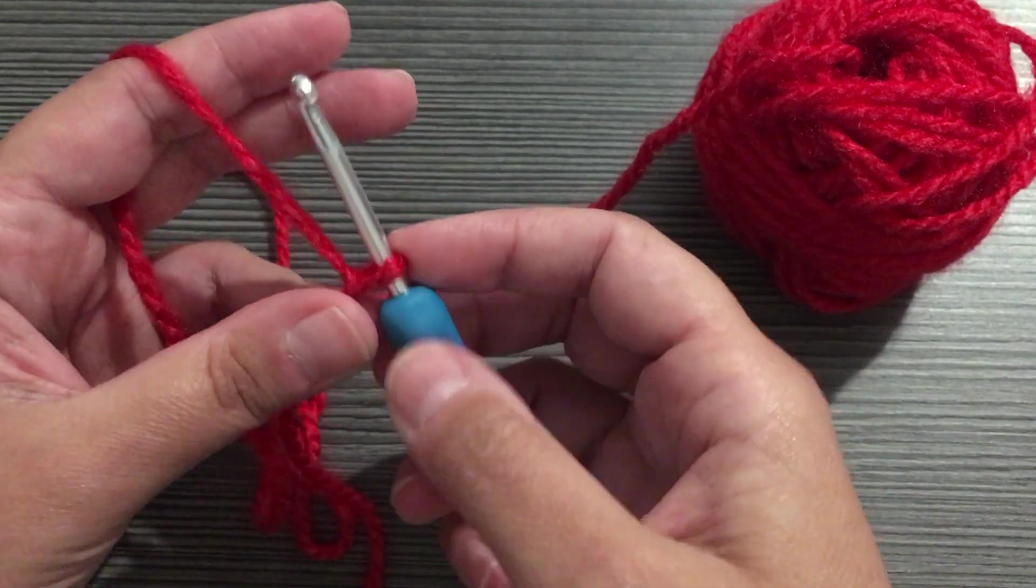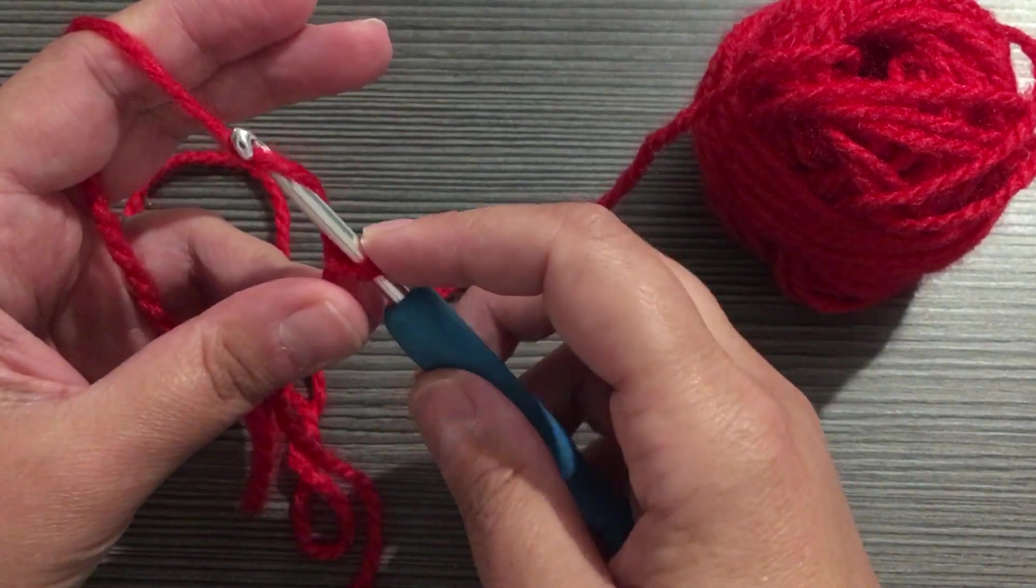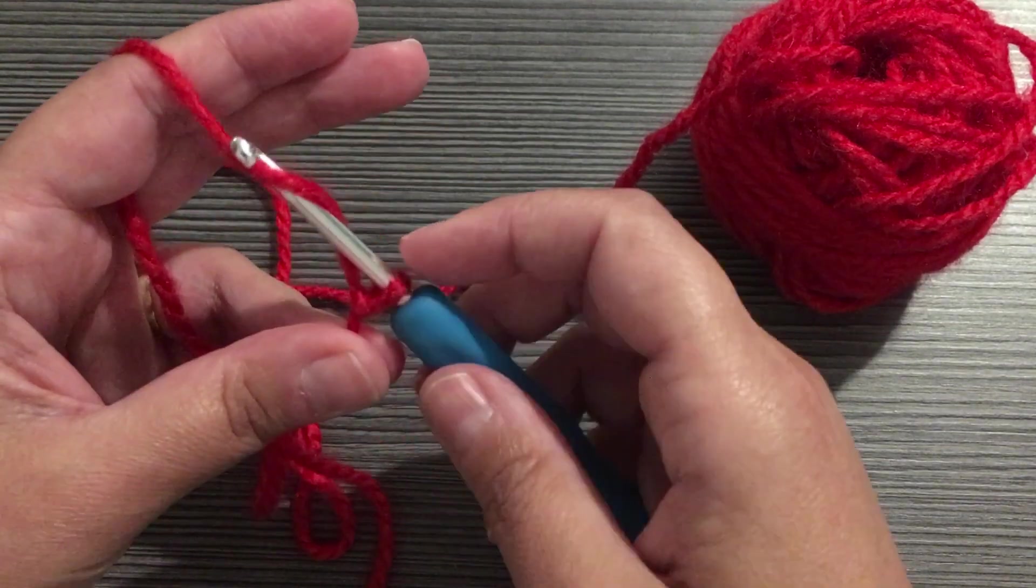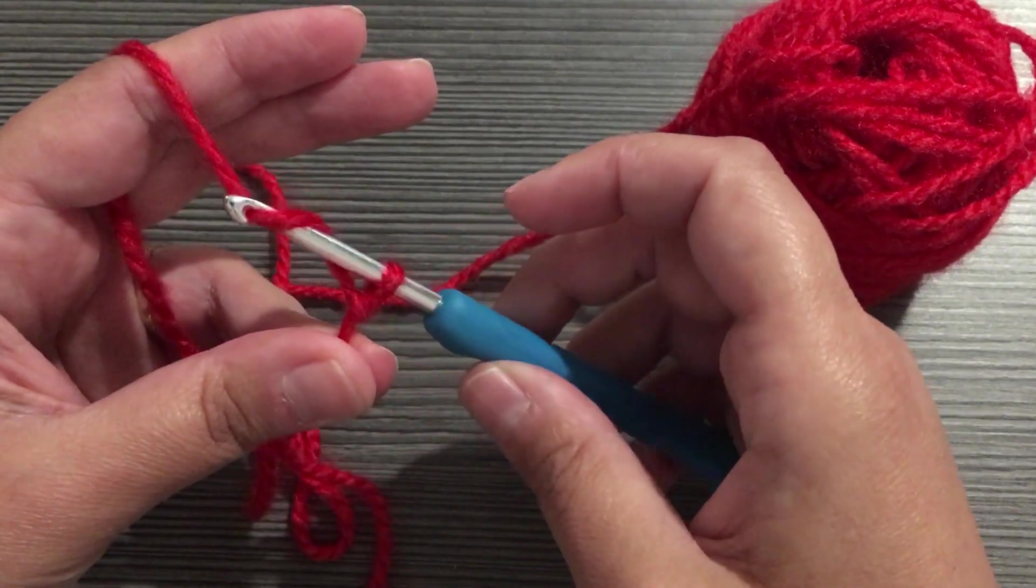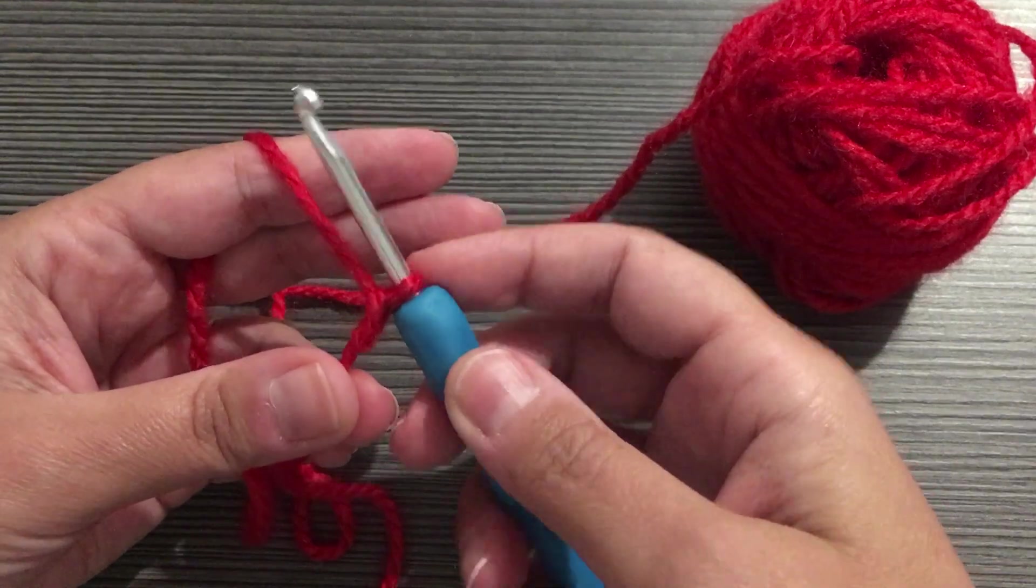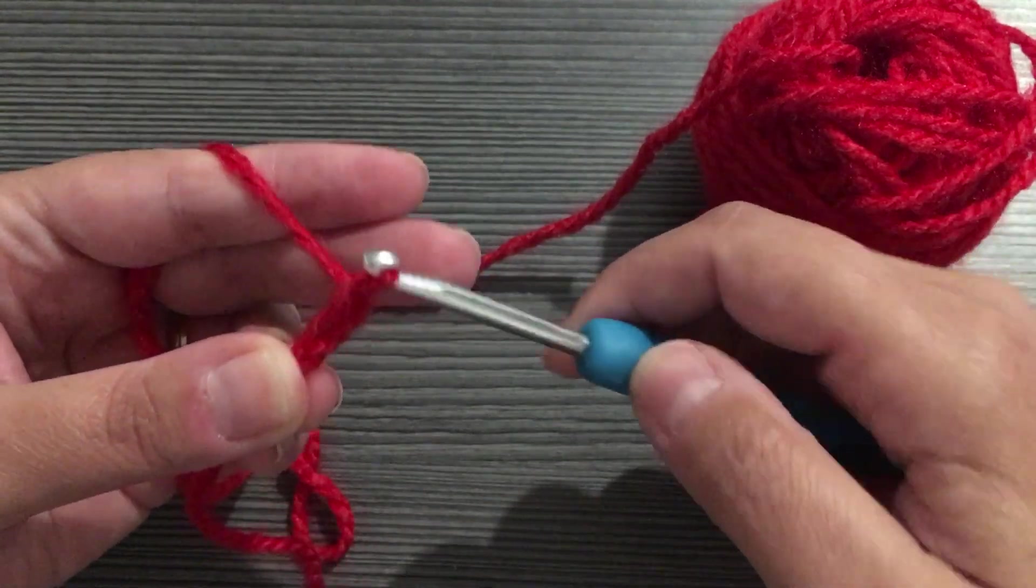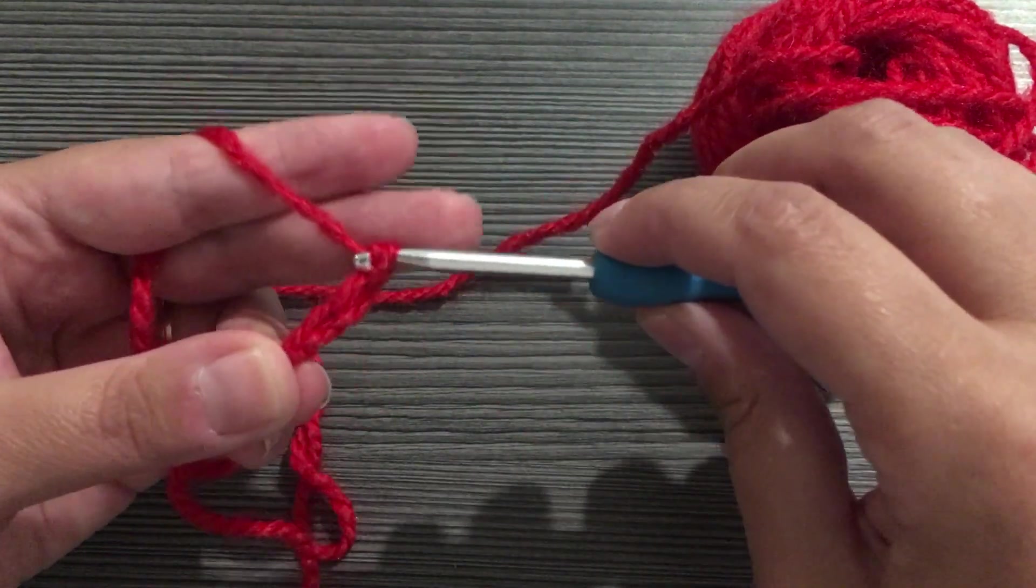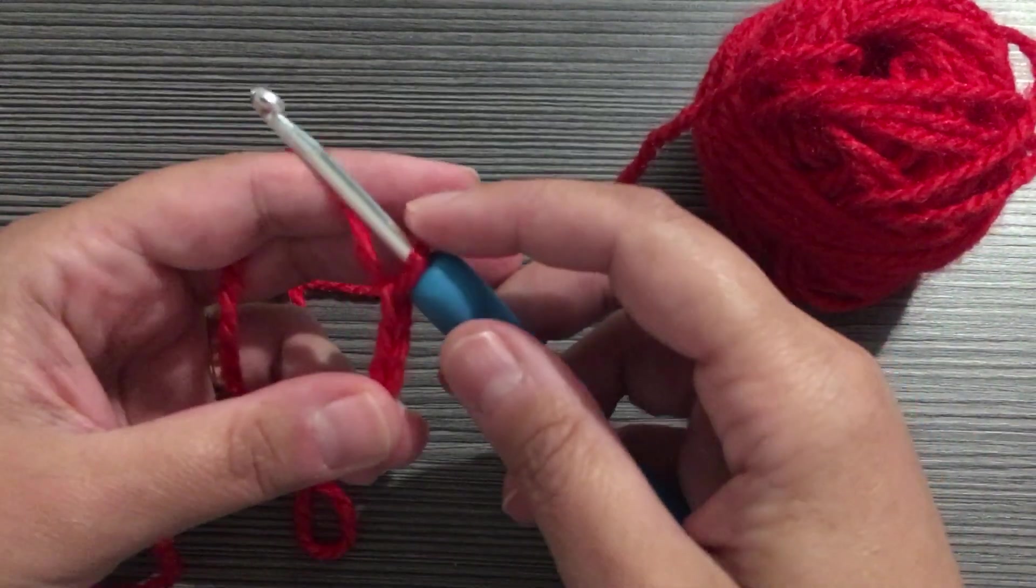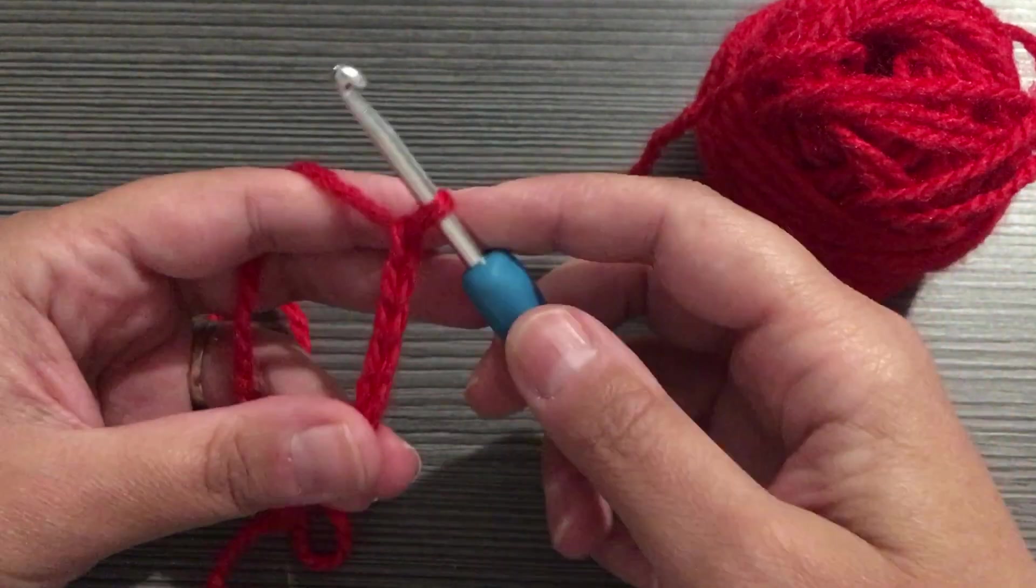We're going to yarn over. Take our hook and put it under the yarn, so the yarn goes over the hook. We're going to yarn over and then slowly turn our hook and pull it through that first little loop that we made. Now let's do that again. Yarn over, pull through the loop. Yarn over, pull through the loop. Yarn over, pull through the loop.